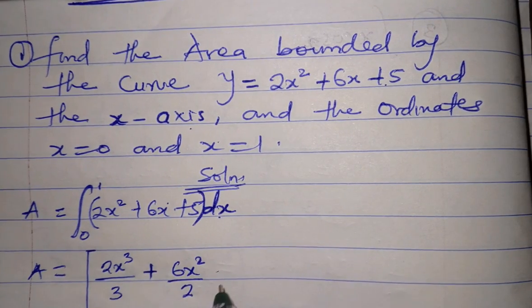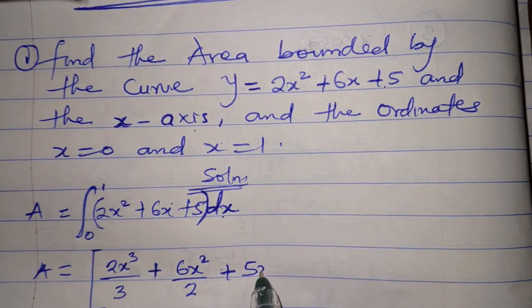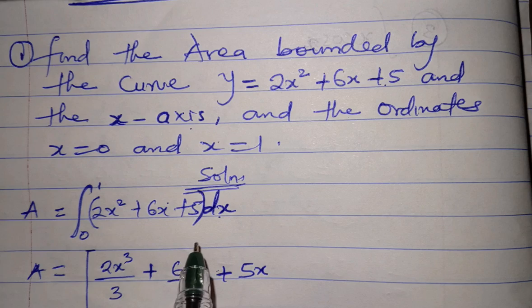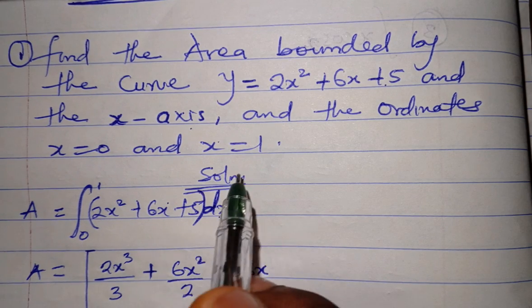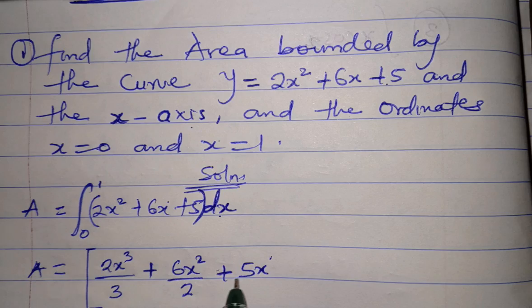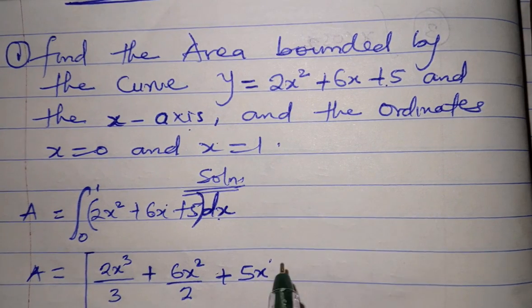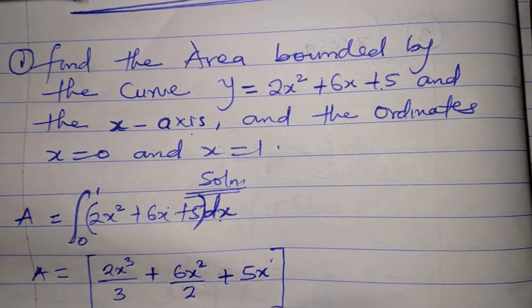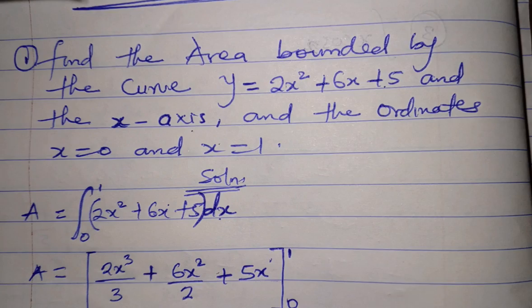Now integrate 5 - we'll get 5x. 5 can be written as 5x to the power of 0, so 0 plus 1 is 1, giving us 5x to the power of 1, divided by that same 1. We're integrating from 0 to 1, this is a definite integral.